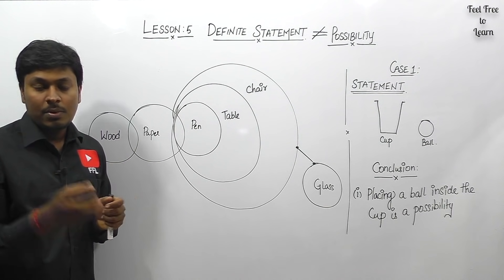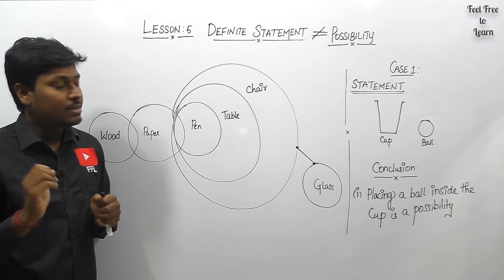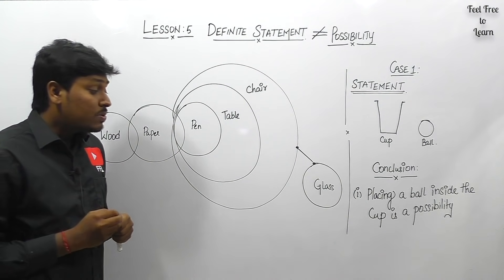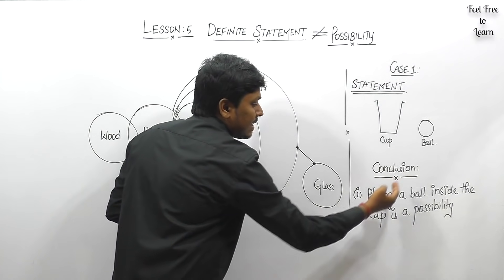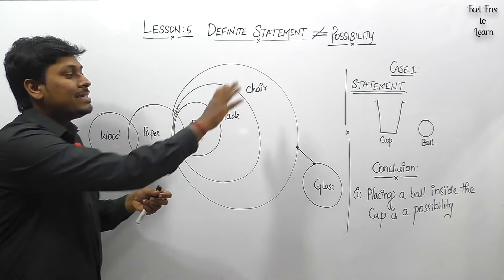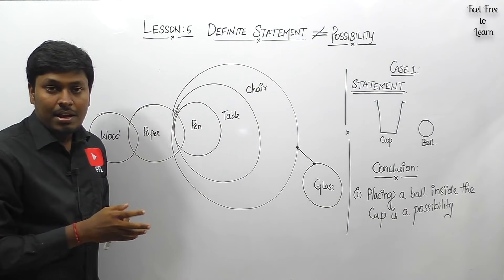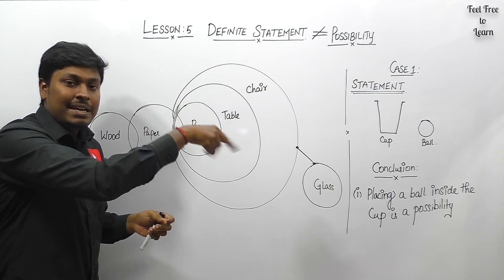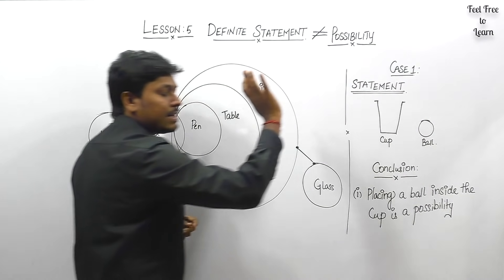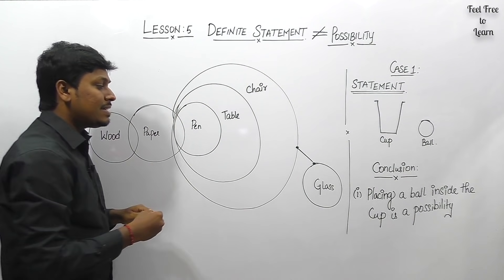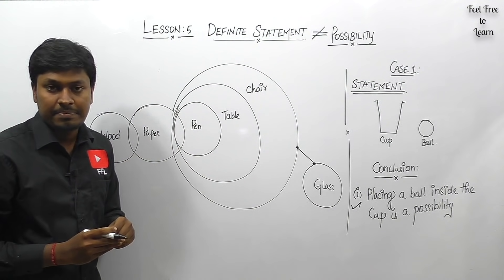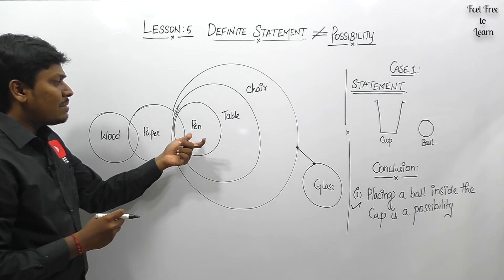Consider a statement: there is a cup and there is a ball. The conclusion asks: 'placing a ball inside the cup is a possibility.' By looking at the statement — there is a cup and a ball — I can definitely say I can place this ball inside the cup, so the conclusion is correct. This is the normal possibility concept we already saw in lesson number three.